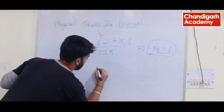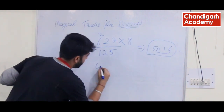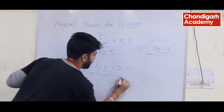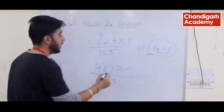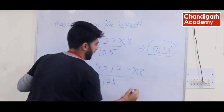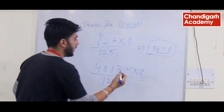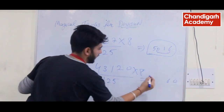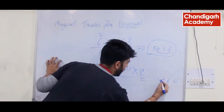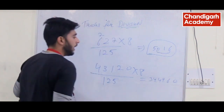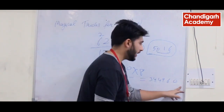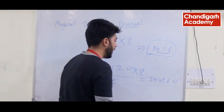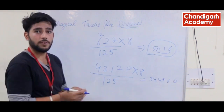Let's take another example with a 5-digit number: 43120 divided by 125. Multiply by 8: 8×0 is 0; 8×2 is 16, carry 1; 8×1 is 8 plus 1 is 9; 8×3 is 24, carry 2; 8×4 is 32 plus 2 is 34. Leave the last 3 digits and put a decimal point, giving us 43120 divided by 125.